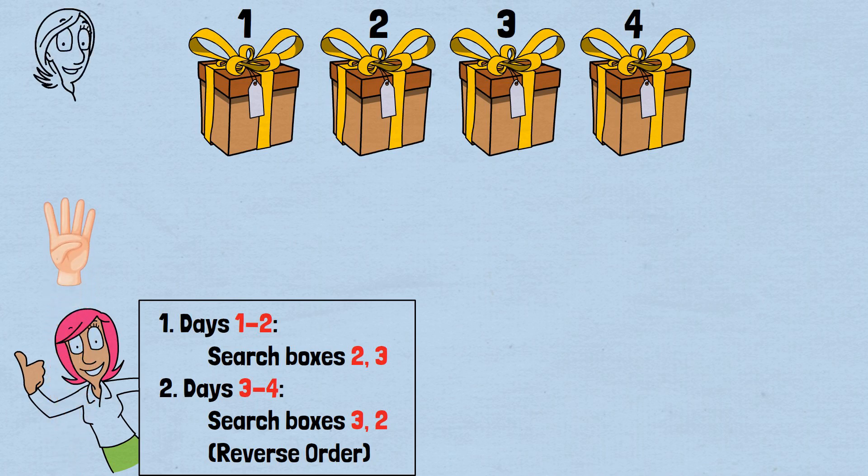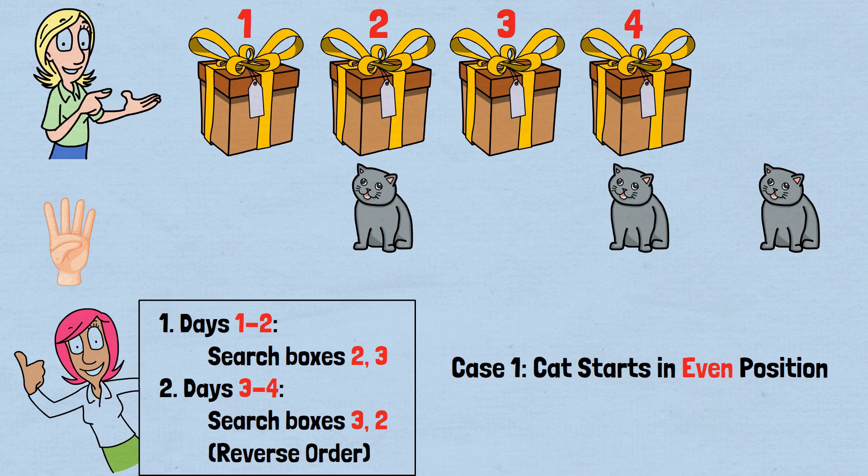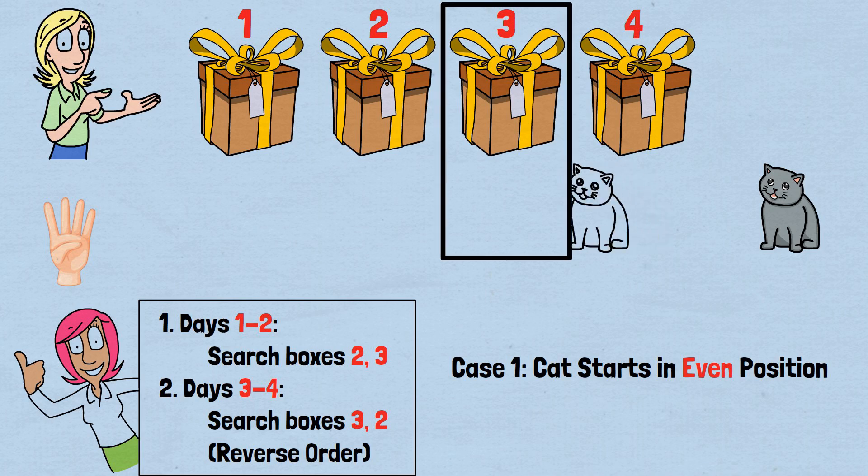Let's work through the 4 box case in detail to see how the general principle applies to even numbers of boxes. Setup: Boxes 1, 2, 3, 4. Cat starts in unknown location. Case 1: Cat starts in even position, box 2 or 4. Day 1: Search box 2. If cat is there, victory. If not, cat was in box 4. Day 2: Search box 3. Cat moved from box 4 to box 3. Guaranteed victory.